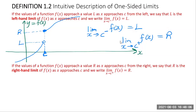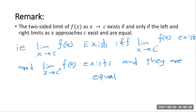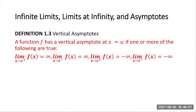Here is a remark: the two-sided limit of f(x) as x approaches c exists if and only if the left limit and the right limit both exist and they are equal. If the left limit and the right limit exist and are equal, then the two-sided limit exists; and vice versa — if the two-sided limit exists, both one-sided limits exist and equal the same value.